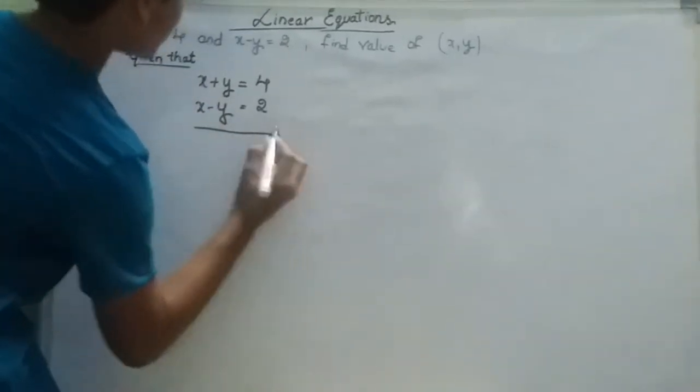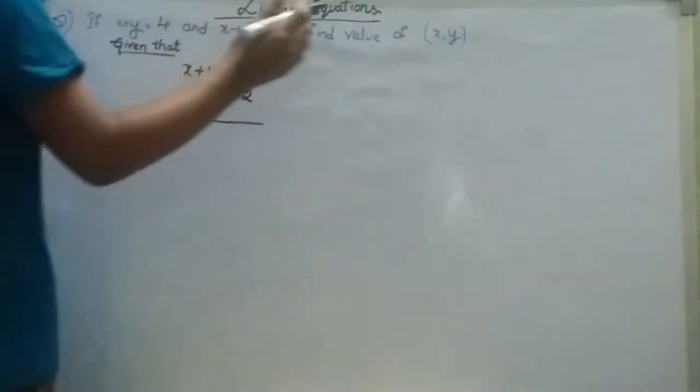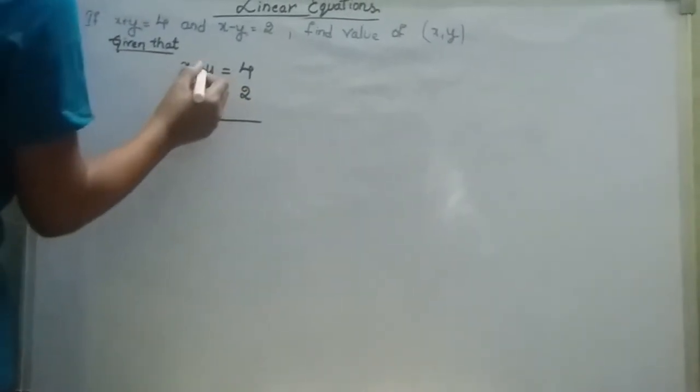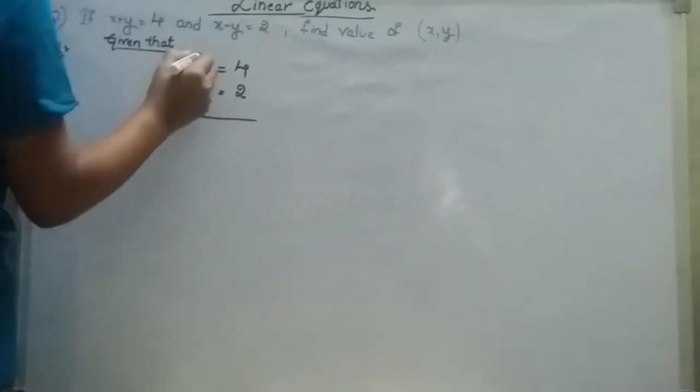By adding both equations, we can find the value of (X, Y). By adding, plus Y and minus Y will cancel out.